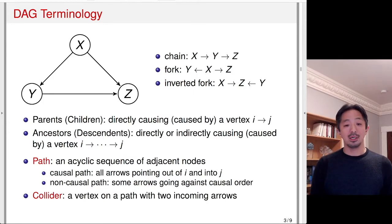Finally, the collider represents a vertex or node on the path with two incoming arrows. In the above example, Z is a collider on the inverted fork path. So X, Z, Y, that's a non-causal path. And Z is a collider on that path, because the arrows are pointing into Z. That's basically the DAG terminology that are going to be important.